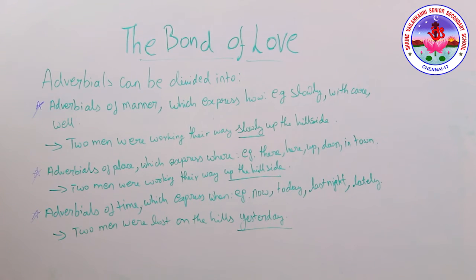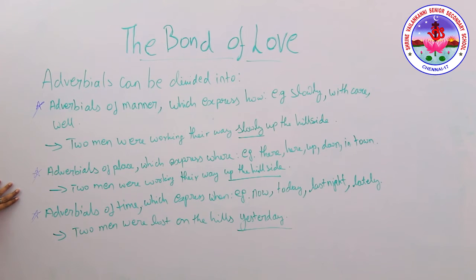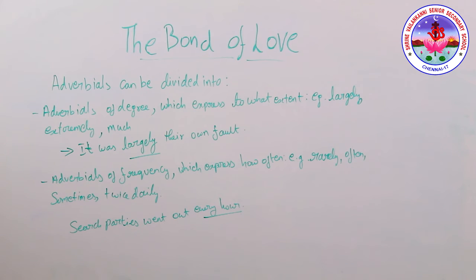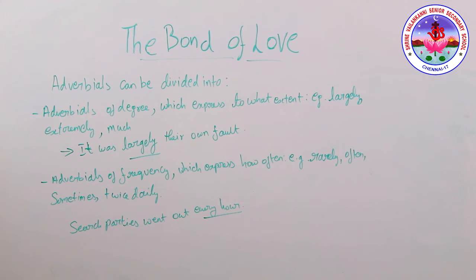Examples: 'Two men were working their way slowly up the hillside' — 'slowly' is adverb of manner. 'Two men were working their way up the hillside' — 'up the hillside' is adverb of place. 'Two men were lost on the hills yesterday' — 'yesterday' is adverb of time. Adverbial of degree expresses to what extent — examples: largely, extremely, much. Adverbial of frequency expresses how often — examples: rarely, often, sometimes, twice, daily.